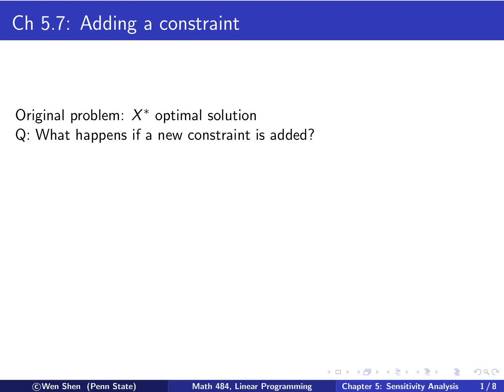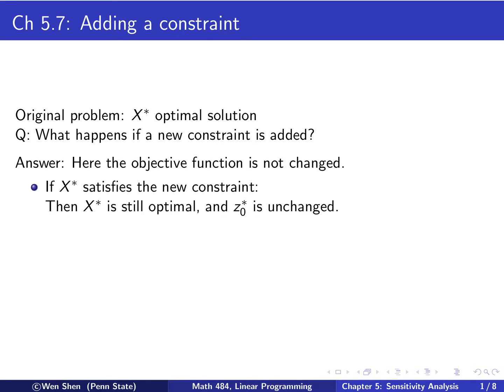So let's say I have an original LP problem, and I have found the optimal solution, I call it capital X star. The question is, what happens if a new constraint is added? Well, that depends. We want to point out that here, the only change we made is adding a new constraint. The objective function remains unchanged.